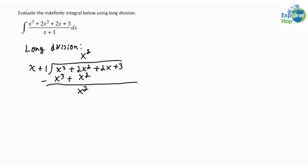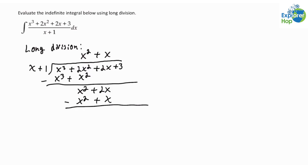Then we bring down the 2x. Now we see that x times x gives us x squared, so we'll write down plus x. Then x times x is x squared, and x times 1 is x. Then we subtract again: x squared minus x squared is 0, and 2x minus x is x. Then we bring down the 3, so plus 3.